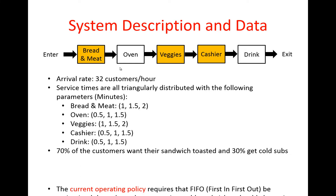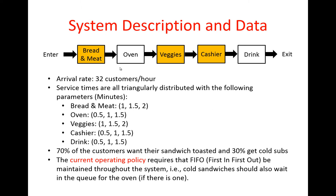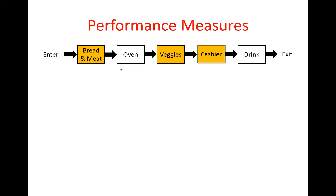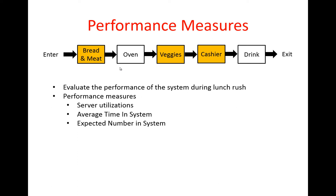However, the current operating policy requires that we maintain first-in-first-out throughout the system. In other words, we do not allow customers who want cold sandwiches to pass customers waiting for their sandwich to be toasted. As for performance measures, we want to evaluate server utilizations, average time in system, and expected number in system at steady state.